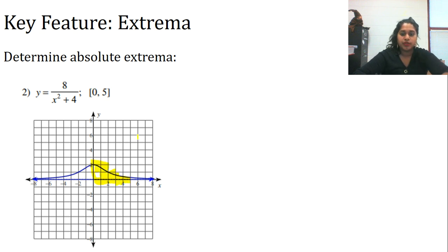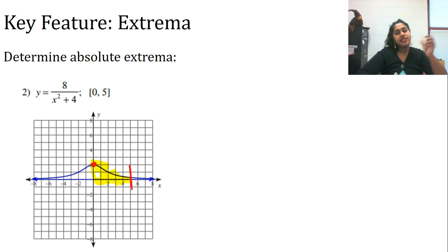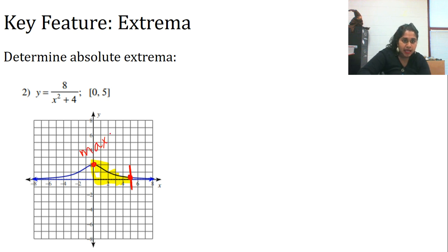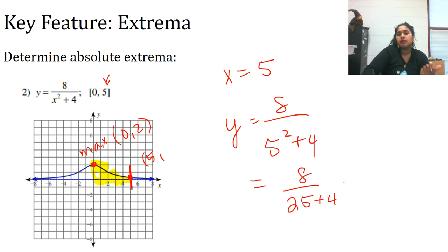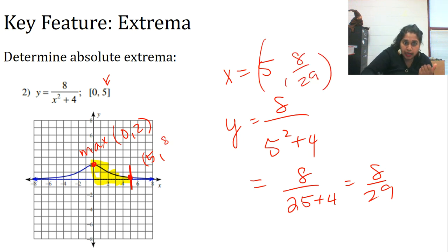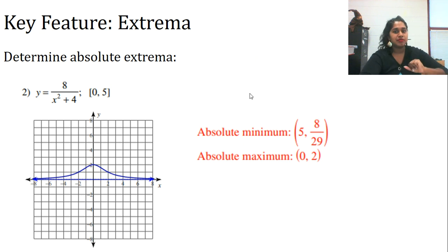We're restricted to [0, 5]. I see a max, but at x = 5 I don't see a defined minimum from the graph. Because it's a restricted domain, I can solve for that endpoint. From the graph, I read a max at (0, 2). For the min at x = 5, I plug in and get y = 8/29. So the minimum is at (5, 8/29).